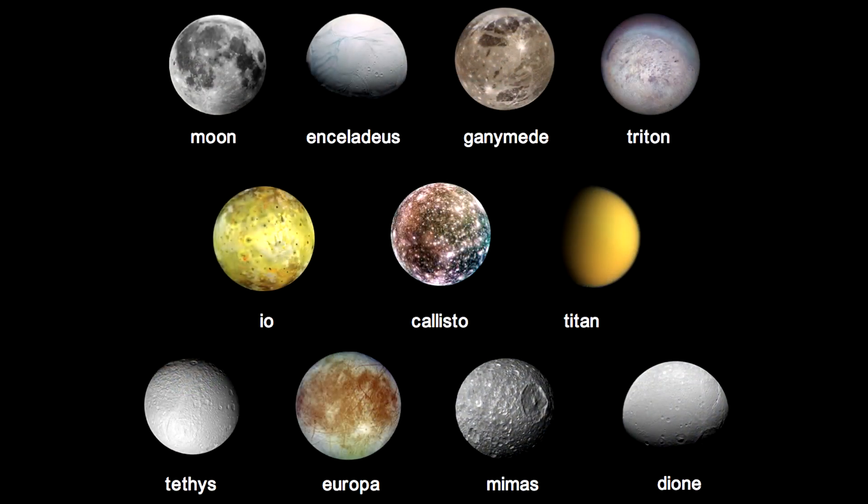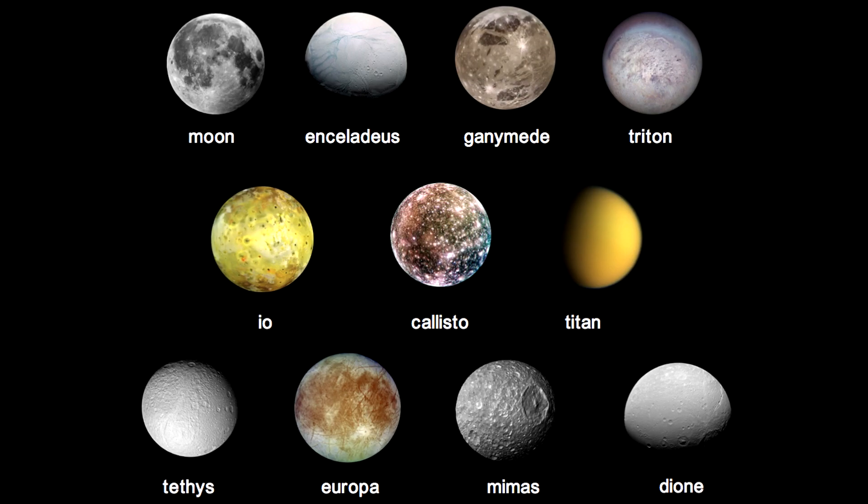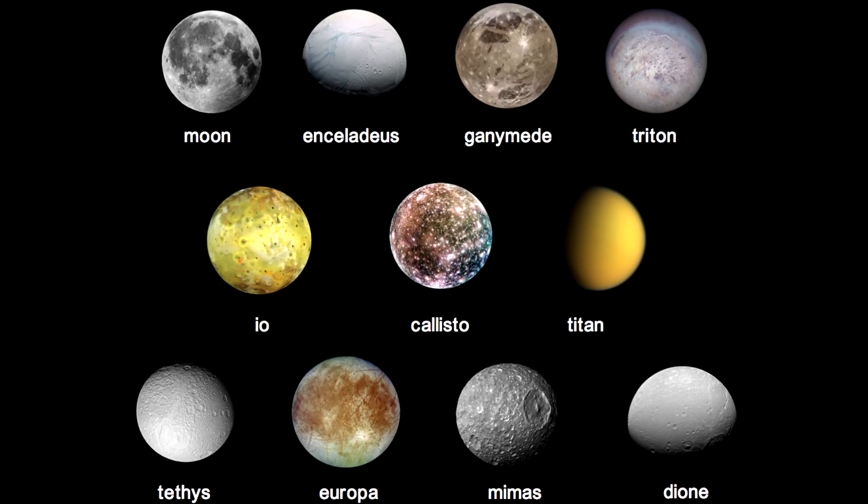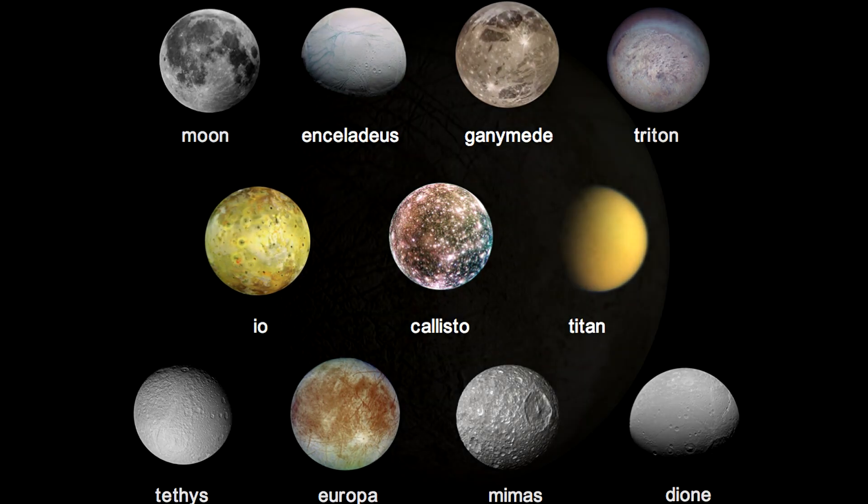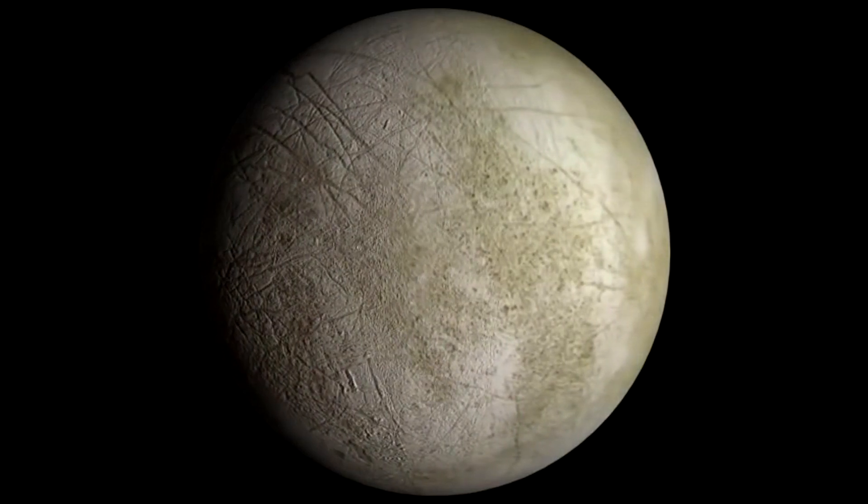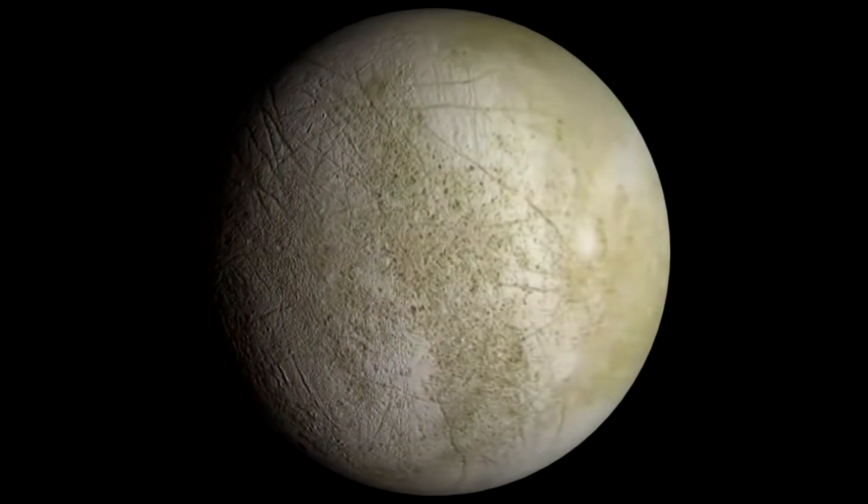Europa is slightly smaller than the moon. With a diameter of 3,122 kilometers, it is the sixth in size among satellites and the fifteenth among all objects in the solar system. It is the smallest of the Galilean satellites.